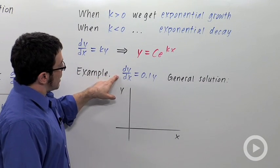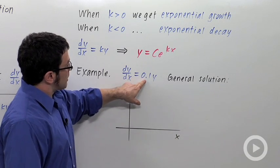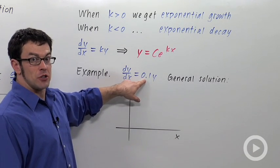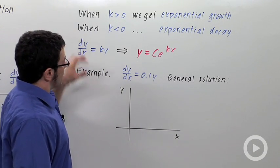And here's an example, dy dx equals 0.1y. Here, k is positive, so we get exponential growth. According to this formula,